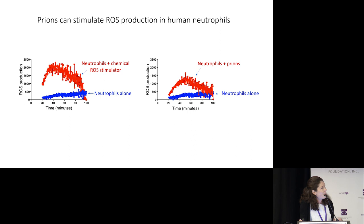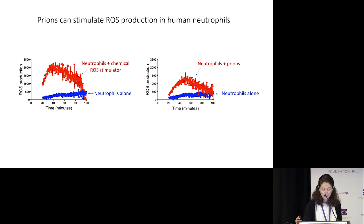You can see on the left that when I take these cells and add a chemical ROS stimulator, that red line going up shows an increase in the production of those natural disinfectants compared to the blue line where the neutrophils are untreated. This looks very similar to what happens when I add prions to the dish and get activation of these neutrophils and production of these ROS disinfectants.